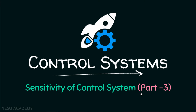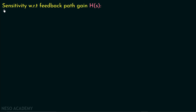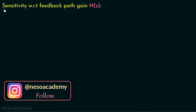In this presentation, we are going to discuss Part 3 of Sensitivity of Control Systems. Till now, we have discussed sensitivity of an open loop system, sensitivity of a closed loop system with respect to forward path gain, and now we are going to discuss sensitivity of a closed loop system with respect to feedback path gain.